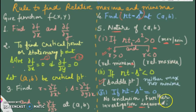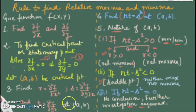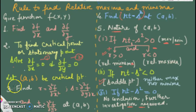When the second derivative test fails, we need further investigation by looking at the definition and observing the behavior of the function near the point. In the next lecture, I will complete this topic and take some examples where we will use this rule to find relative maxima and relative minima. Thank you.